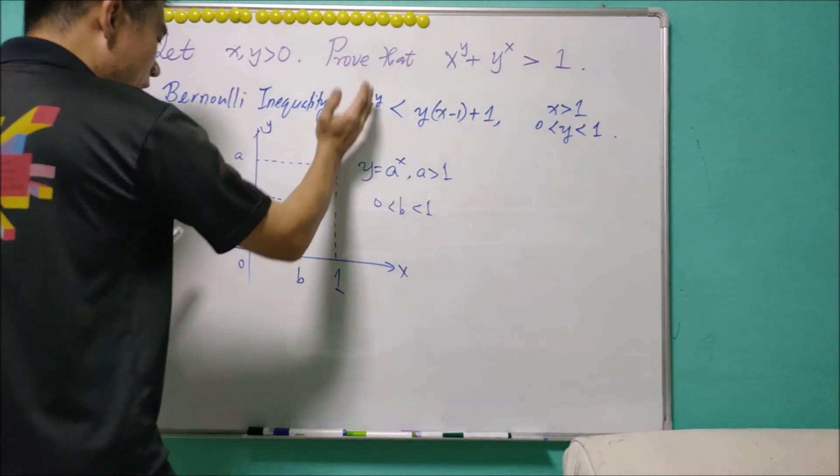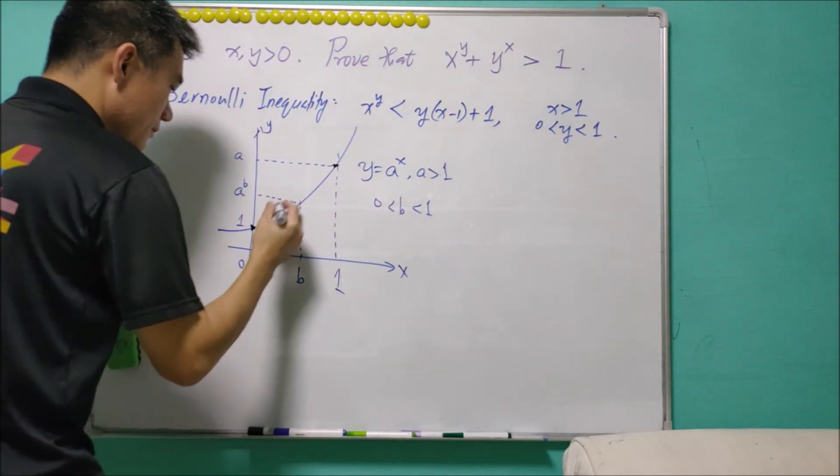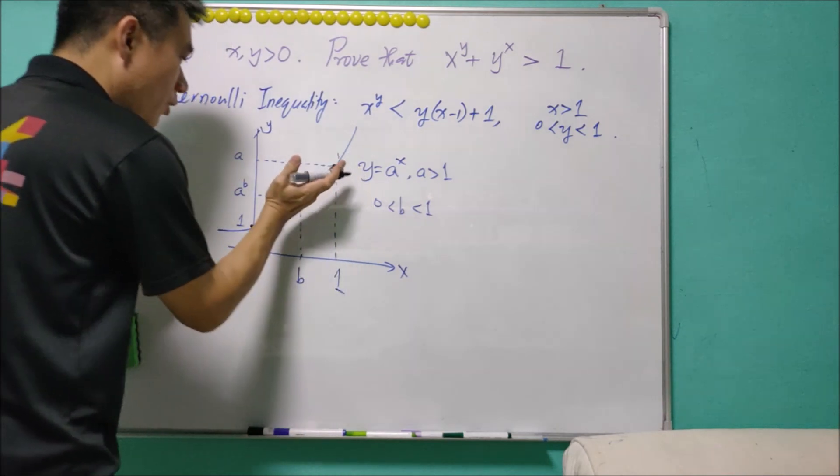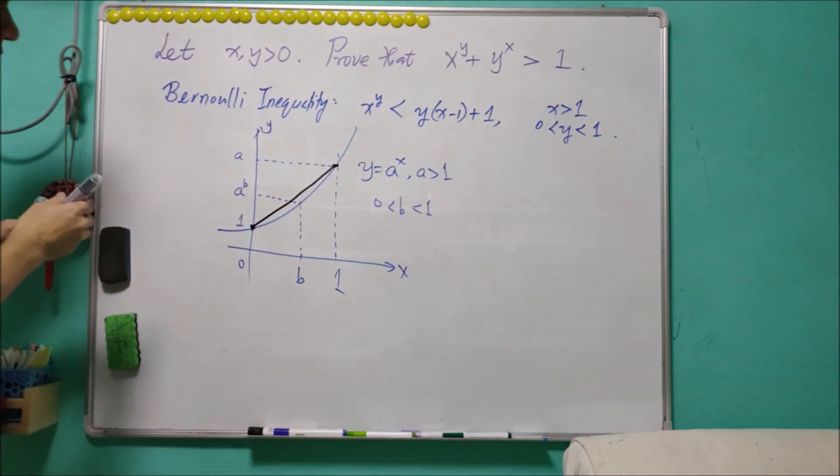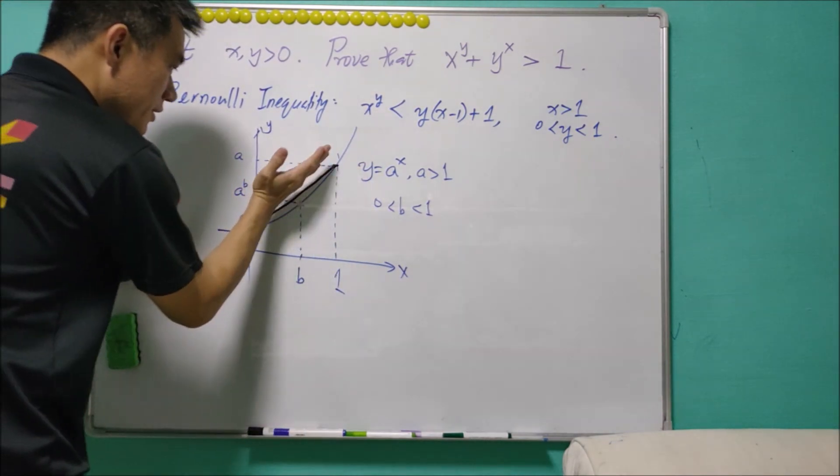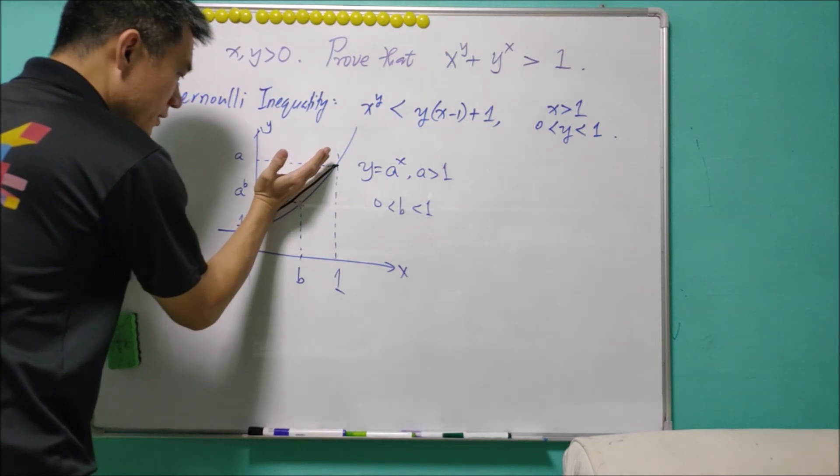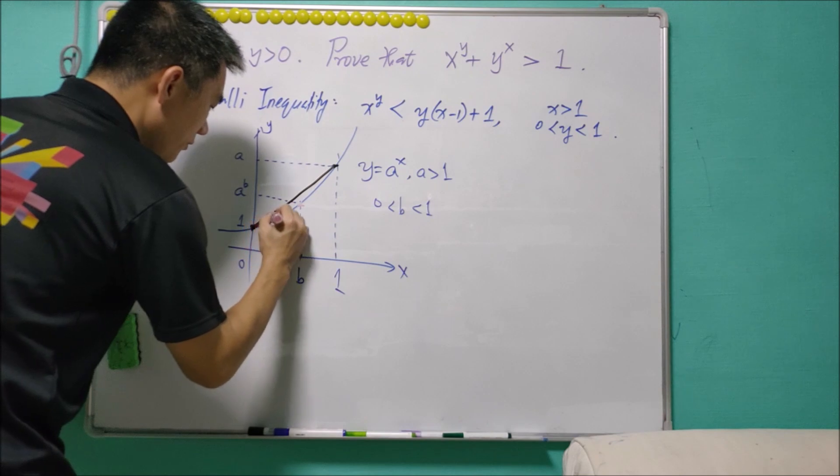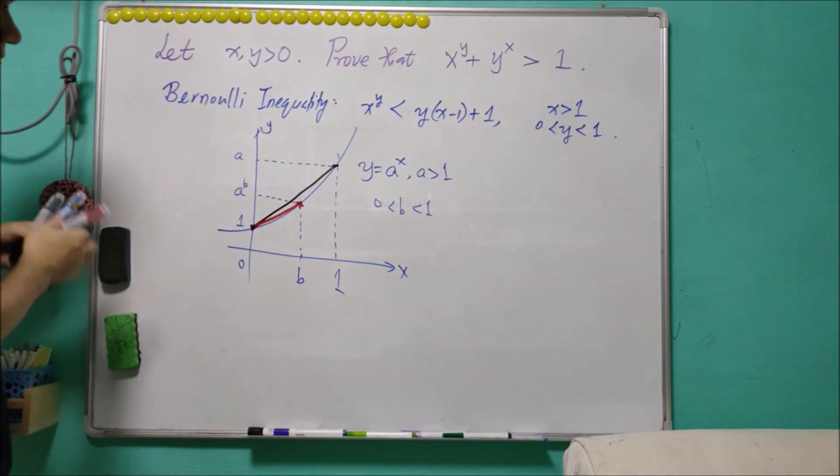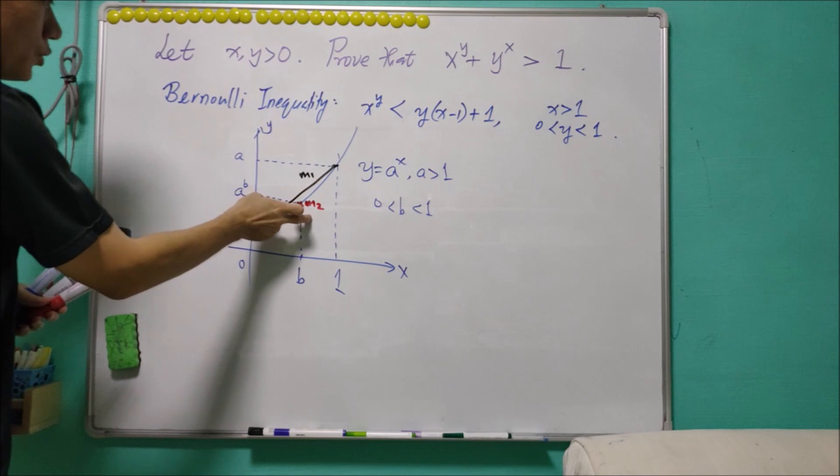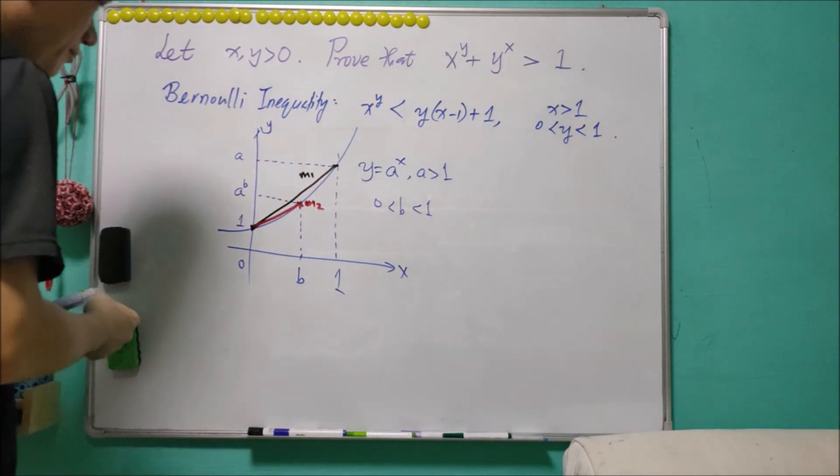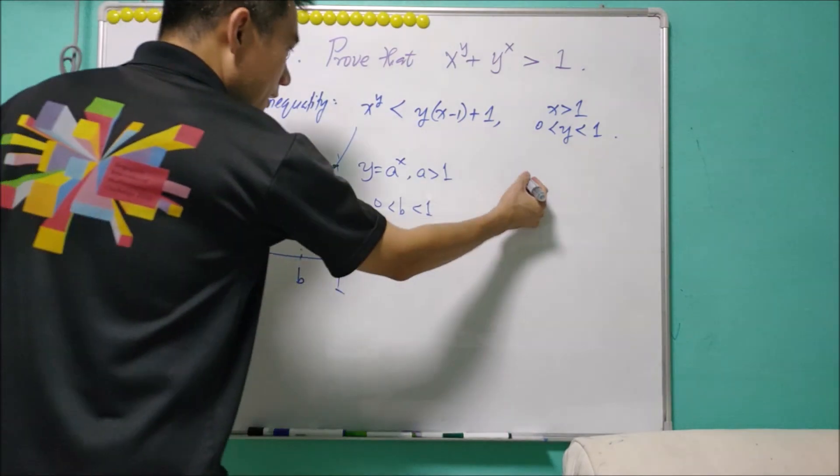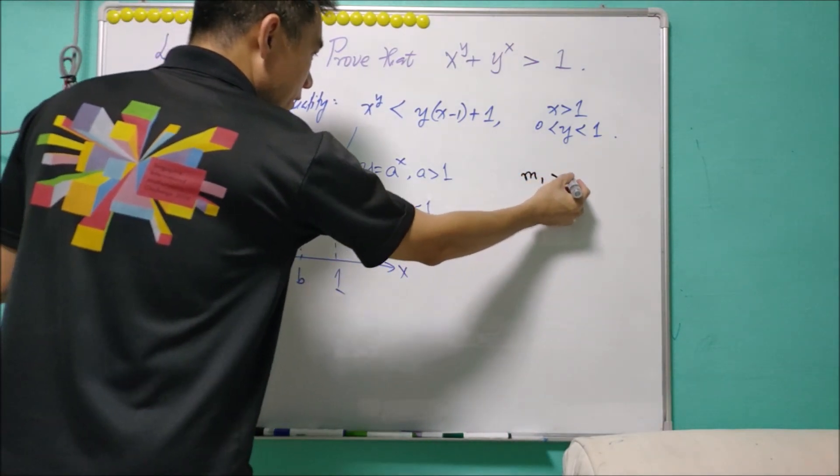Note that this graph is concave upwards. So the segment joining these two points will be always above the curve. So it means that the gradient for this segment, which is in black color, will be greater than the gradient of the segment in the red color. So call m1 and m2 as their gradient respectively. And we know that m1 will be greater than m2.